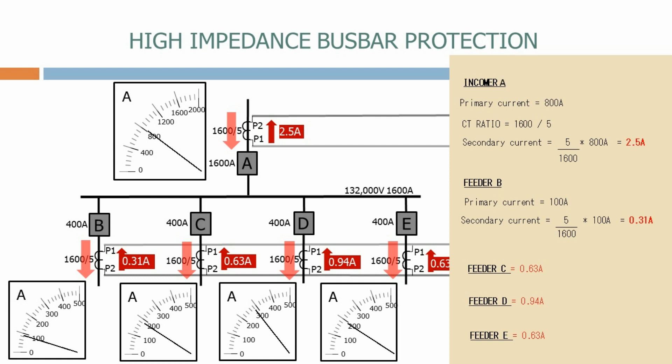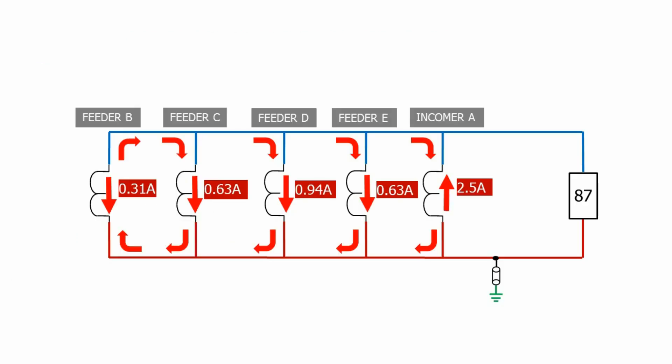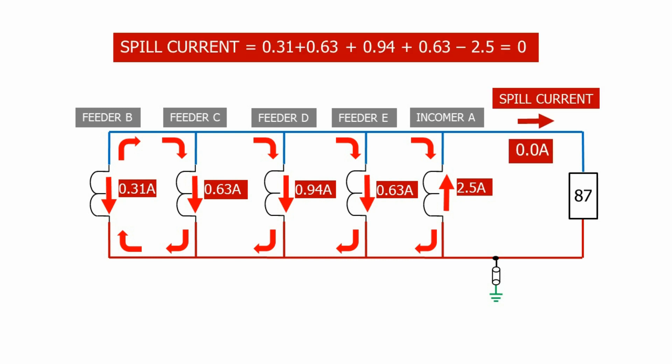Let's see how these currents compare on a CT equivalent circuit. The current flowing through the relay, sometimes called the spill current, is the summation of all these currents which equals zero. Therefore in this balanced condition, no current flows through the relay and it doesn't operate.